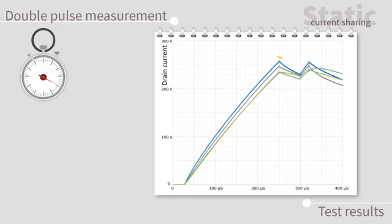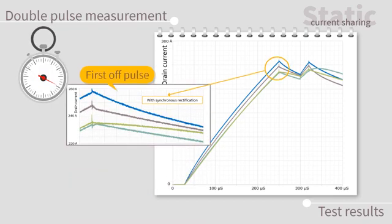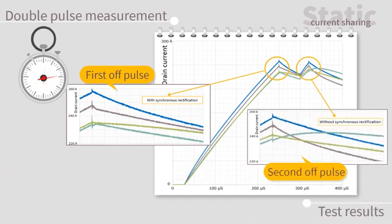In this double pulse test, you can see that during the first off pulse, synchronous rectification was used and during the period of off pulse, no synchronous rectification was used.